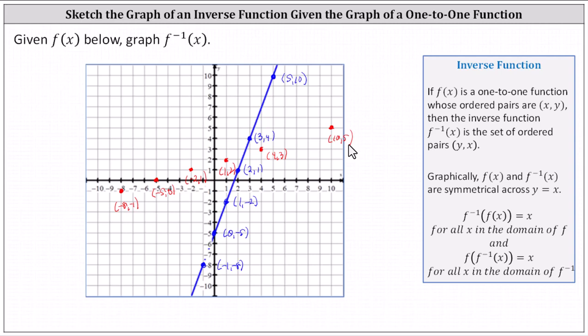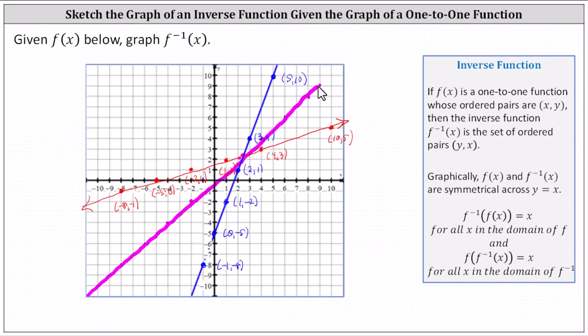Notice now we can easily graph f inverse of x, which is a line passing through these six points and looks like this. There's one more property to discuss when graphing a function and its inverse on the same coordinate plane: the graph of f of x and f inverse of x will always be reflections across the line y equals x. Here's the graph of y equals x. Notice if we reflect the blue line across y equals x, it does match up perfectly with the graph of f inverse. I hope you found this helpful.